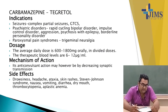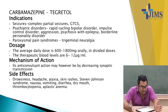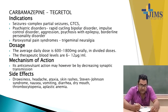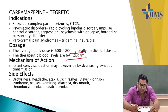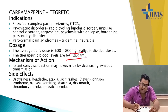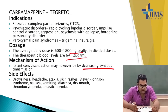Carbamazepine is another mood stabilizer, indicated in complex partial seizures, GTCS (generalized tonic-clonic seizures), rapid cycling bipolar disorder, impulse control disorder, aggression, psychosis with epilepsy, borderline personality disorder, and trigeminal neuralgia. The average daily dose is 600 to 1800 mg orally in divided doses; therapeutic blood level is 6 to 12 micrograms per ml. Mechanism may involve decreasing sodium channel transmission. Side effects include drowsiness, headache, ataxia, skin rashes, Stevens-Johnson syndrome, nausea, vomiting, diarrhea, dry mouth, thrombocytopenia, and aplastic anemia.